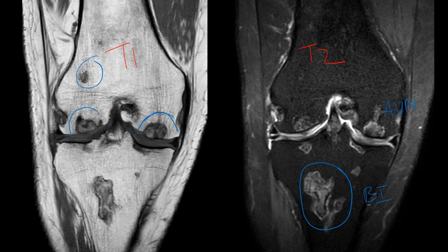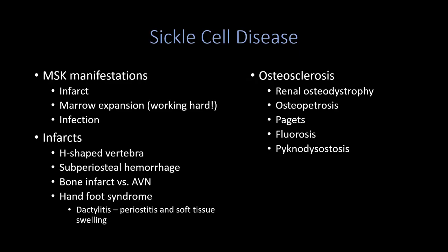The distinction is important: bone infarcts are in the medullary cavity, while AVN extends into the subchondral bone. When AVN causes subchondral collapse, it converts an osseous process into an articular process. Putting it together, this patient with sickle cell disease has diffuse osteosclerosis and regions of AVN, both due to vaso-occlusive disease.